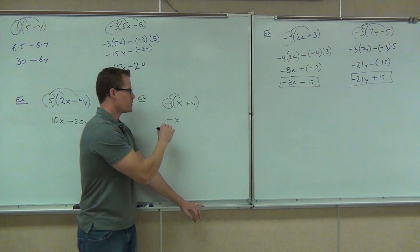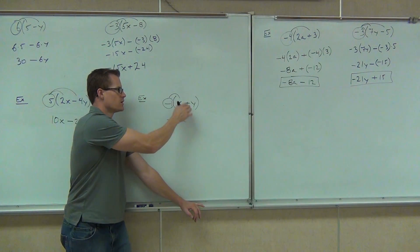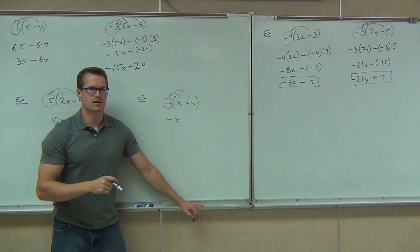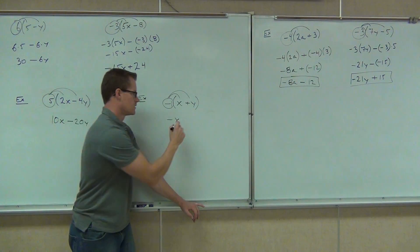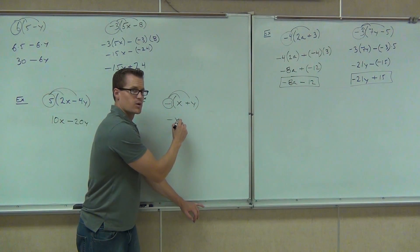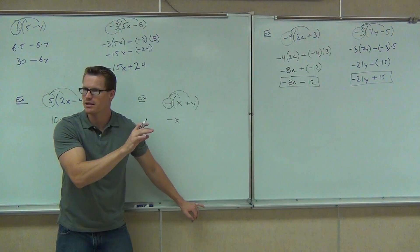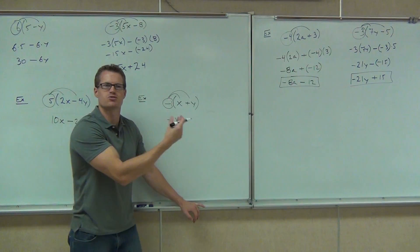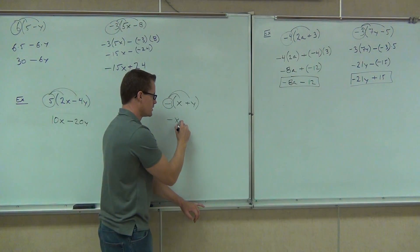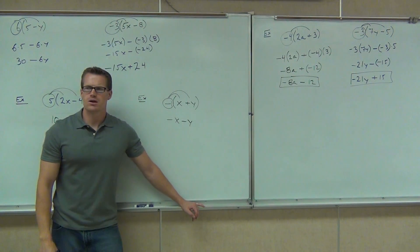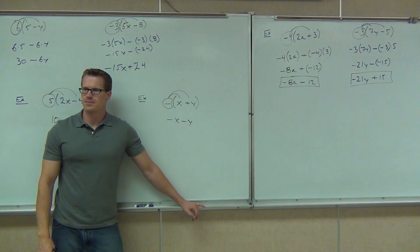Now how much is negative 1 times positive y? How much is that? Negative 1. And I'm going to put, instead of negative y, I'll put minus y. We change that back to a minus. We're kind of tricking the problem a little bit. Minus y.